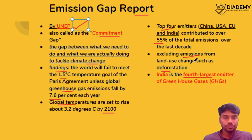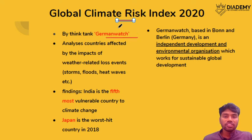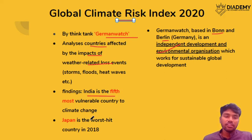The Global Climate Risk Index 2020 is published by Germanwatch, an independent development and environmental organization based in Bonn and Berlin. This report analyzes countries affected by weather-related losses. India is the fifth most vulnerable country, and in 2018, Japan was the most affected country by climate risk.